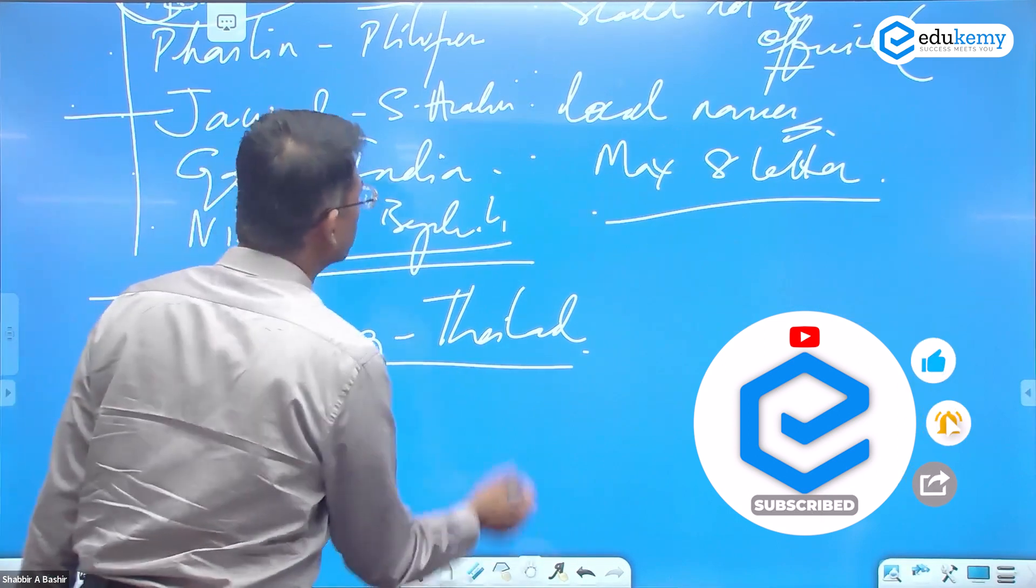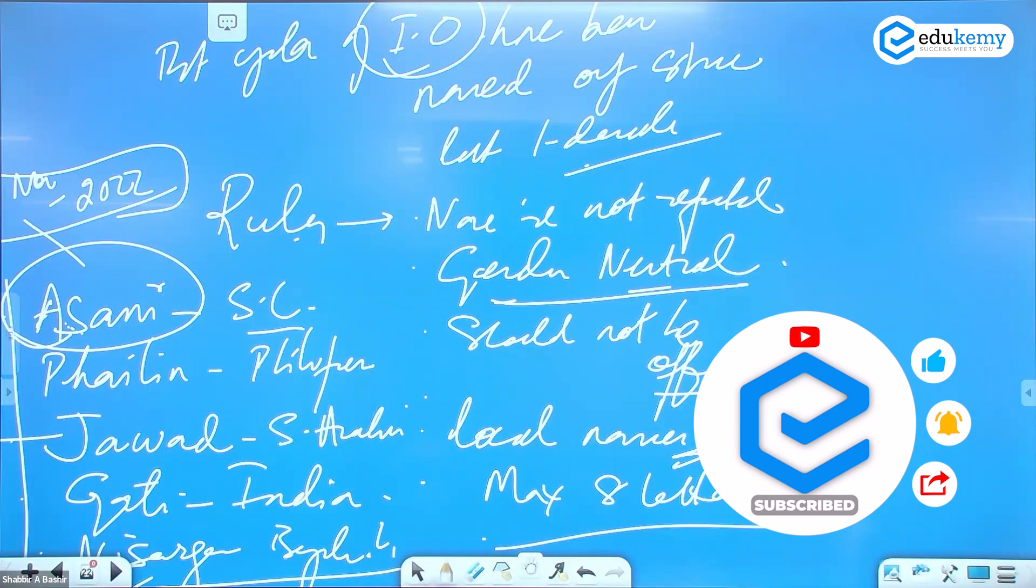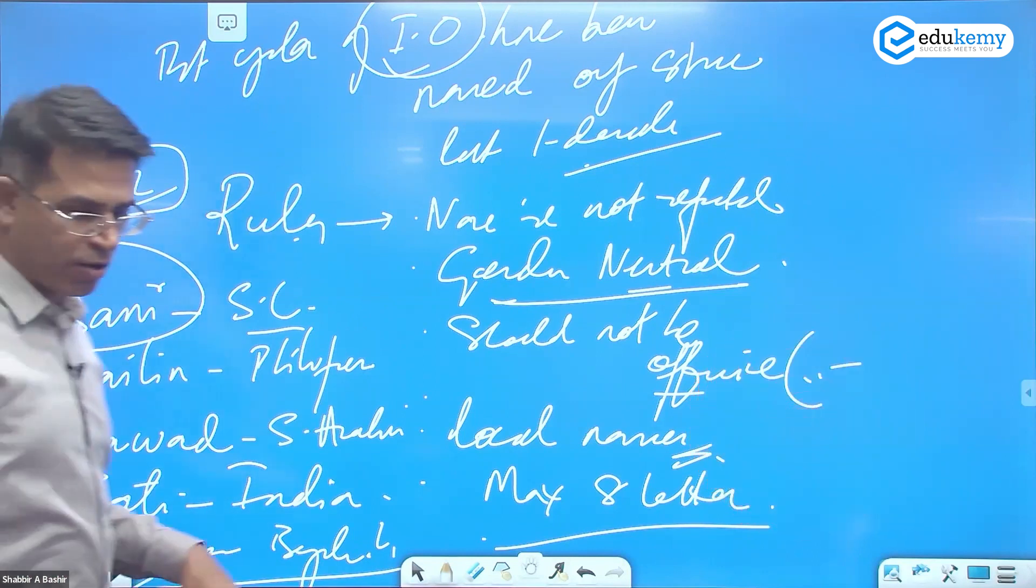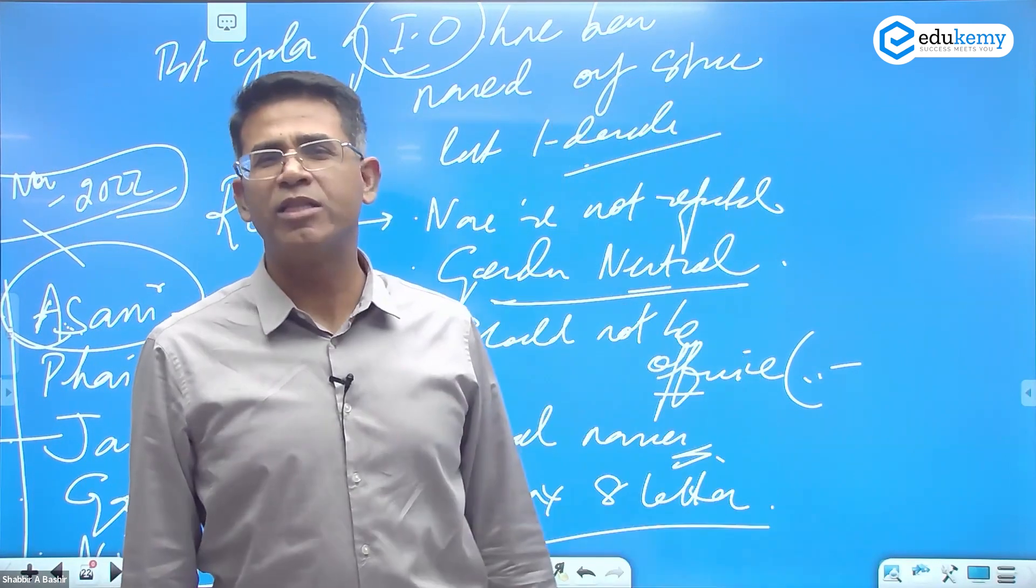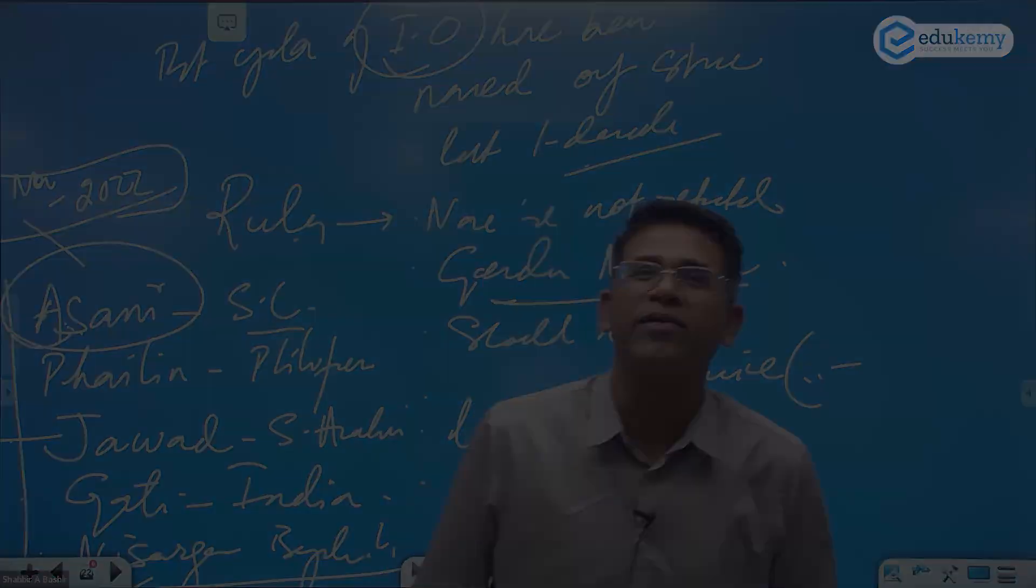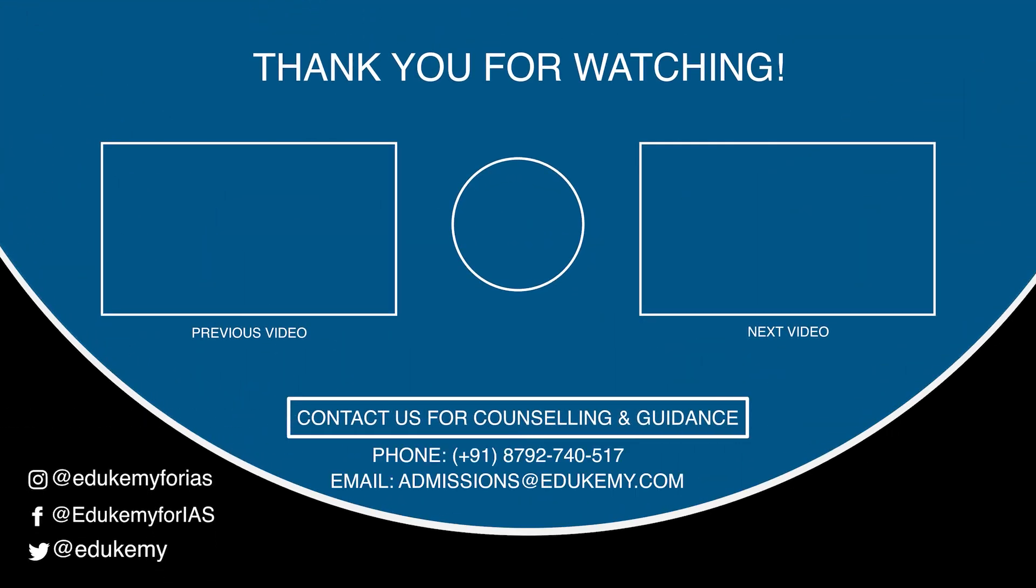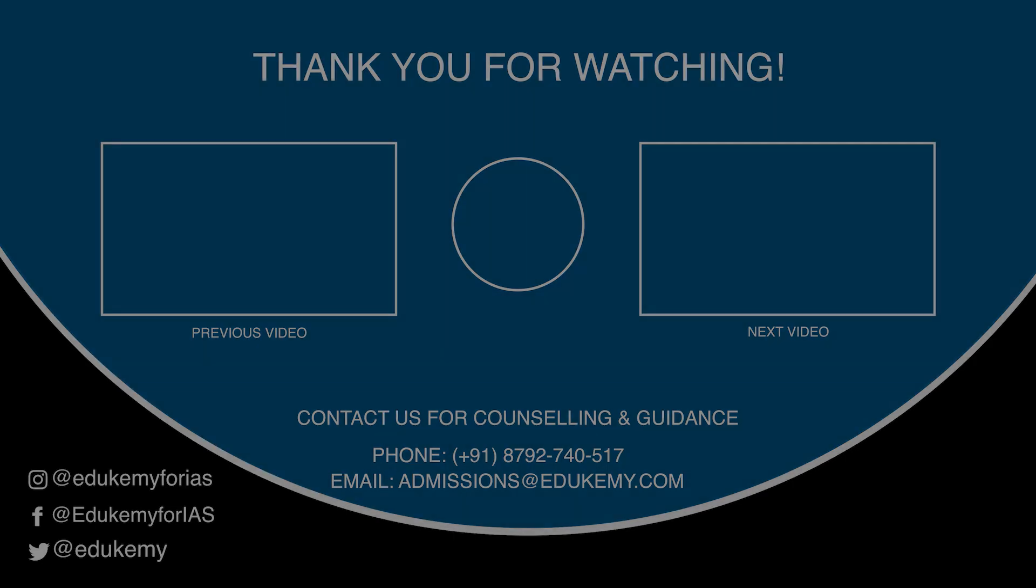One more point - a cyclone is named only when its speed is more than 62 km per hour. Otherwise, it has no name.